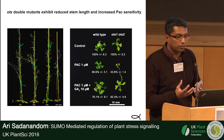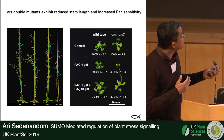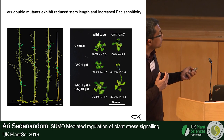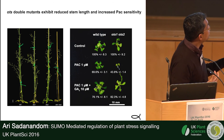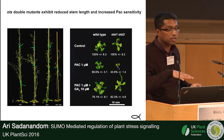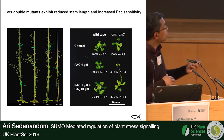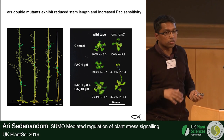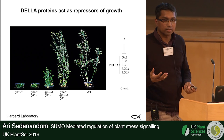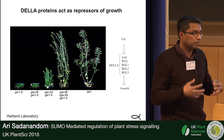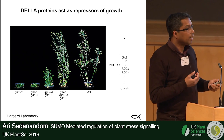The OTS1/OTS2 double mutants — which have no SUMO protease — are always dwarf, and you can observe growth sensitivity when you apply paclobutrazol, which blocks GA biosynthesis. The double mutant is much more sensitive, and you can recover growth by adding GA. Since they are dwarf and sensitive to paclobutrazol, which blocks GA biosynthesis, the obvious target is: are DELLA proteins sumoylated? DELLA proteins are growth repressors — there are five in Arabidopsis — and they regulate how GA promotes growth.